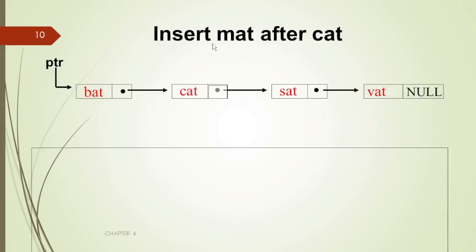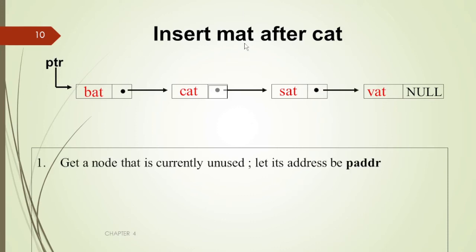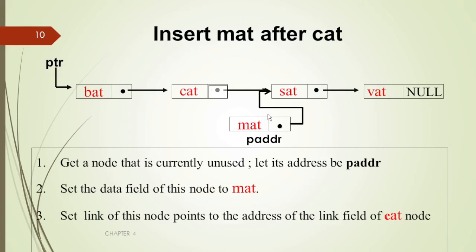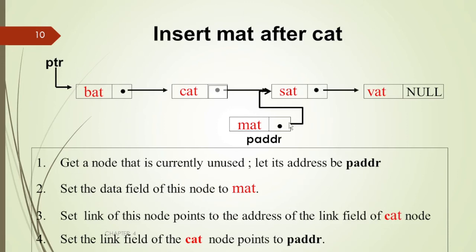To insert 'mat' after 'cat': we want to insert one node with the data 'mat'. We get an unused node whose address is 'paddr'. We insert 'mat' into the data field of this new node. Then we set the link field of this new node to point to 'sat' (the node that currently follows 'cat'). Then we set the link field of the 'cat' node to point to 'paddr', so 'cat' now points to the new node containing 'mat'.